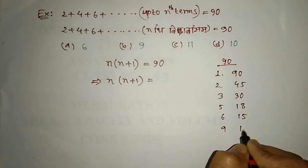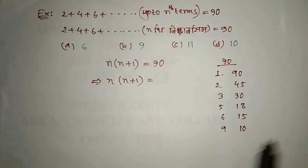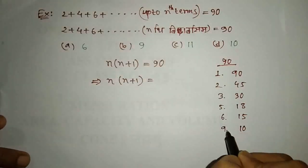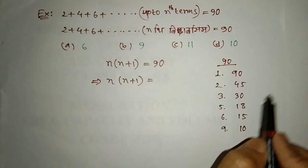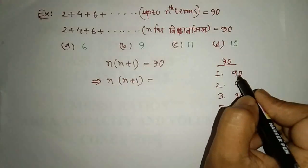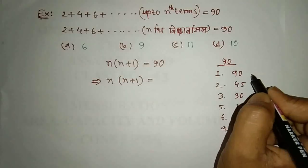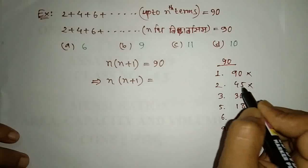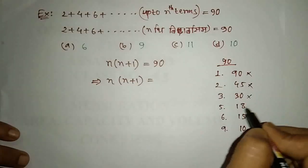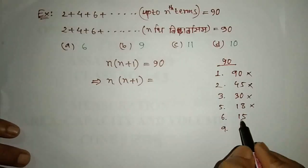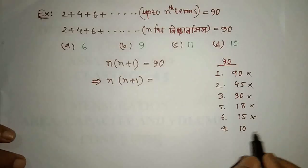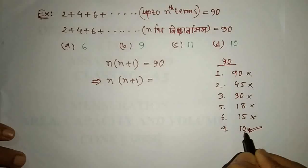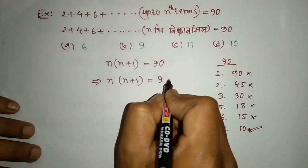So we'll write 9 to 10 when we start with 9. So now, if we take 9 to 10, 9 is bigger. So we'll call this 9 to 10. We'll see 9 into 10. As we'll see the 9 to 10, we'll see the 9 into 10.